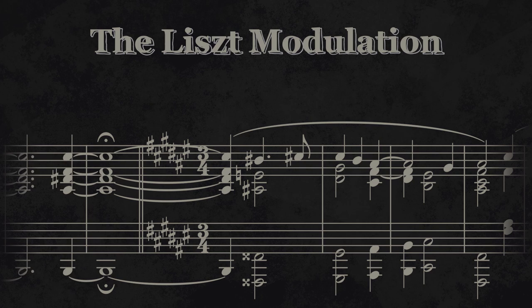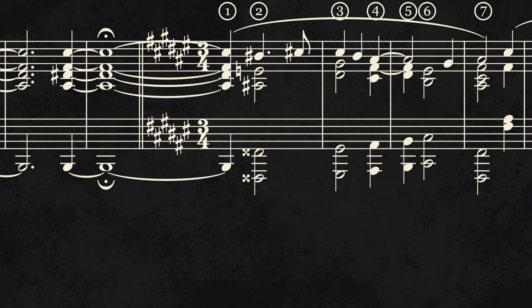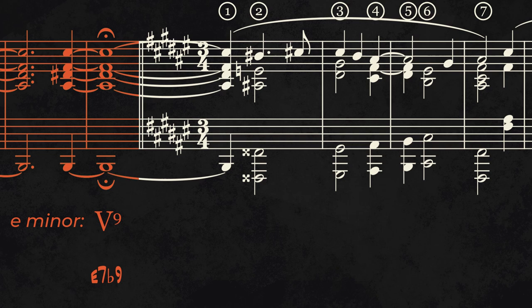The modulation, which begins in bar 329, is preceded by a prolonged dominant 9th in the key of E minor, or a dominant VII b9 in cool jazz talk.